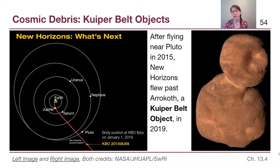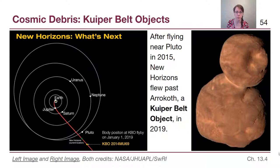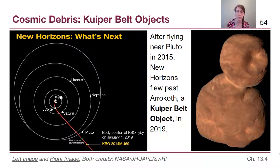The New Horizons mission is ongoing and will continue to give us useful information. It's also important to recognize that Kuiper Belt objects in general are a mix of rocky and icy objects, all roughly in stable orbits around the Sun at very large distances.